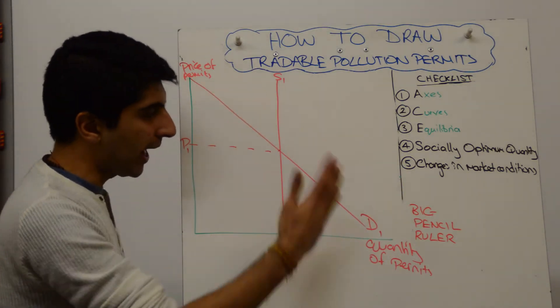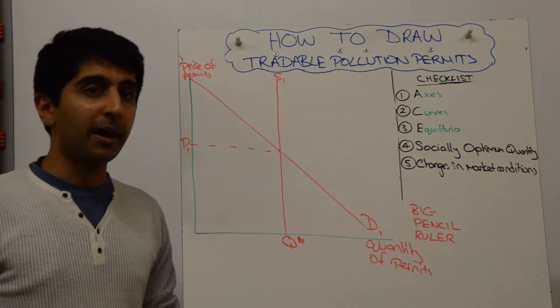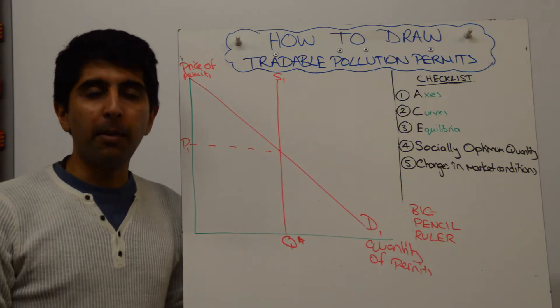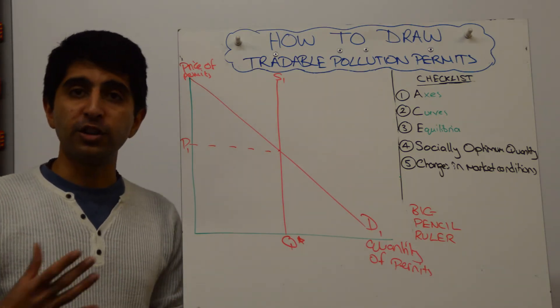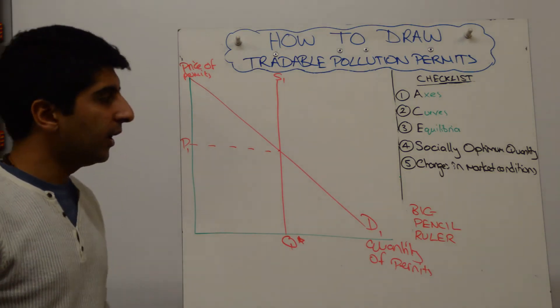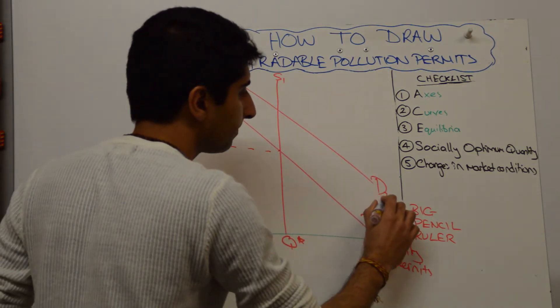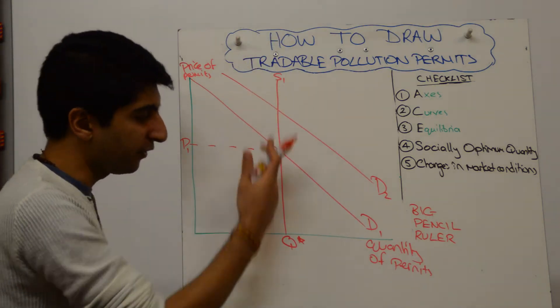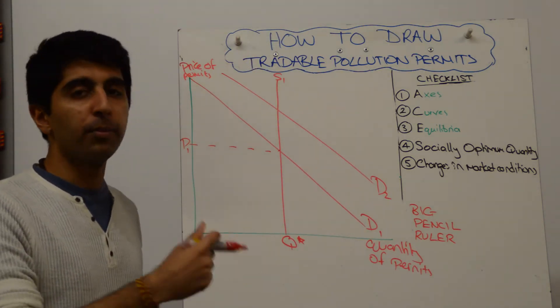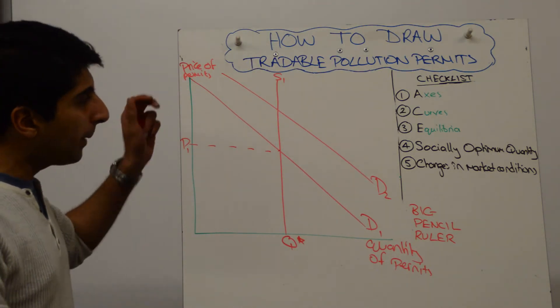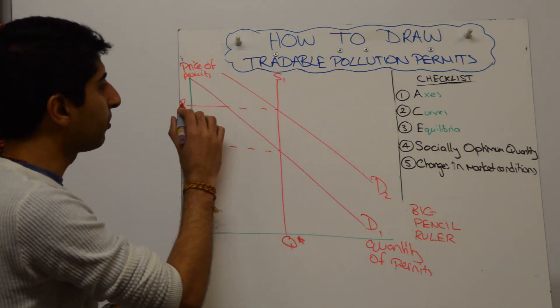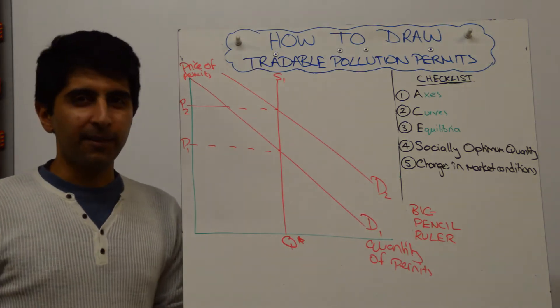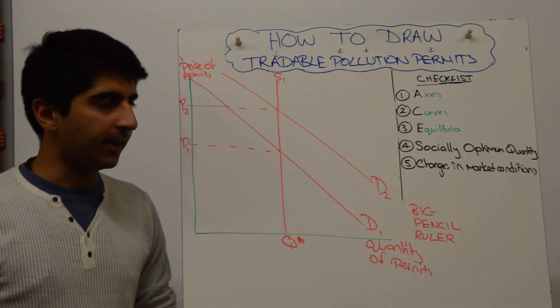So what I would do next is say, look, let's say that there is a huge demand for the permits, maybe because the price is quite low, maybe because for many different firms, investing in green technology is just not cost-viable. So then you might want to show a shift of demand to the right. The quantity will stay exactly the same. It has to because the government has fixed quantity Q-star. There aren't any more permits out there. So what happens? The price goes up. The rationing function of the price mechanism is at work.